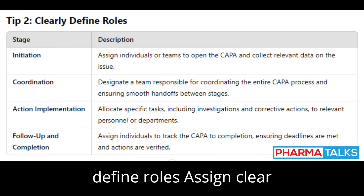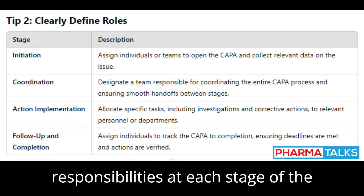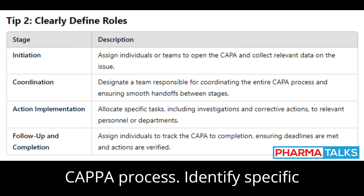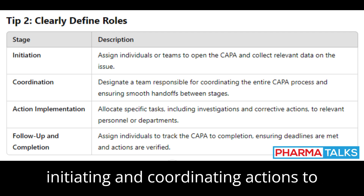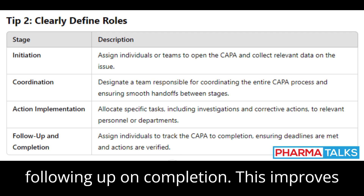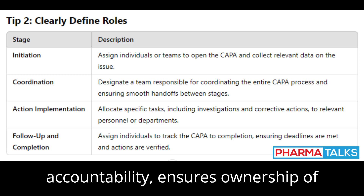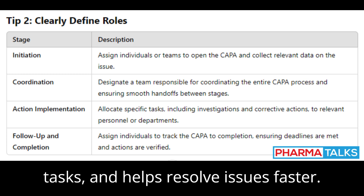Tip 2: Clearly Define Roles. Assign clear responsibilities at each stage of the CAPA process. Identify specific people or teams to handle each task, from initiating and coordinating actions to following up on completion. This improves accountability, ensures ownership of tasks, and helps resolve issues faster.